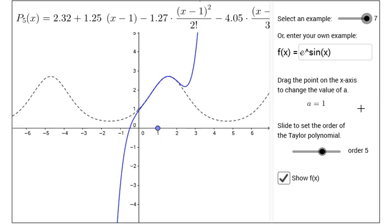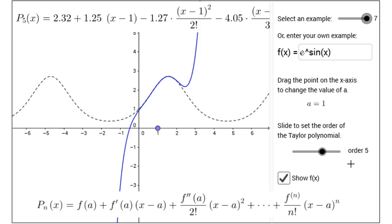So, we've discussed the basic idea behind Taylor polynomials and how they approximate functions. But what is the actual formula for the Taylor polynomial? I've displayed the Taylor polynomial of order n generated by f at x equals a at the bottom of the screen. The formula is somewhat complicated and takes a little while to get used to.